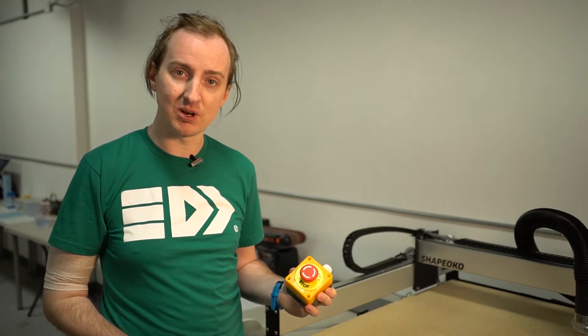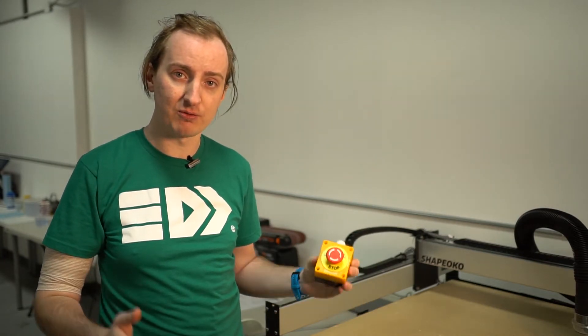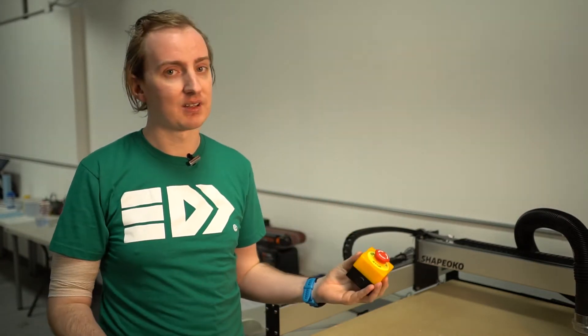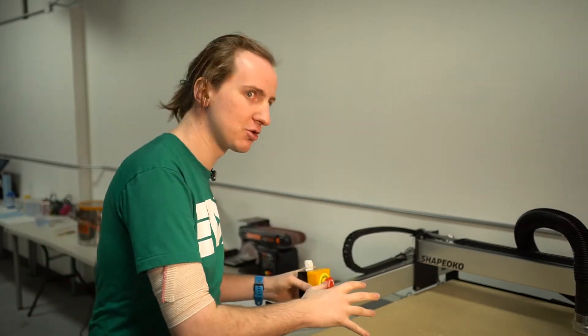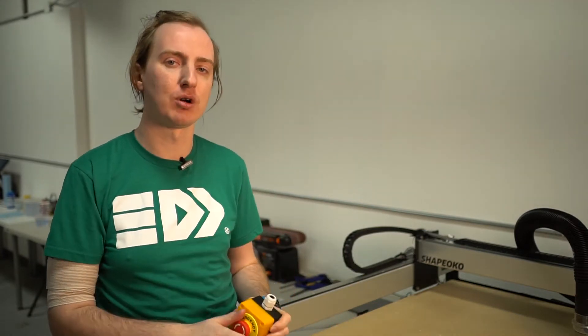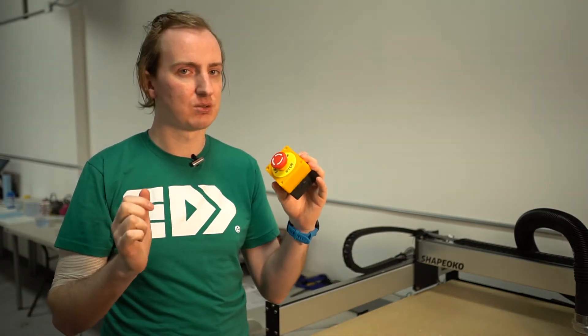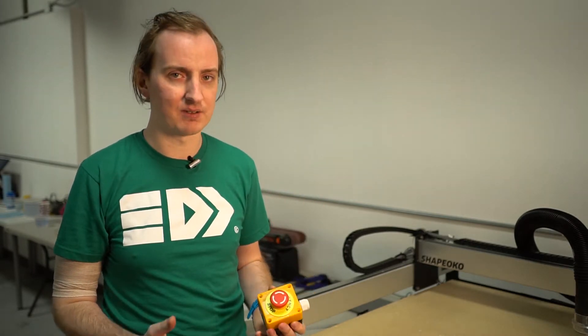The idea being that if you're in a panic situation and you want to just cut the power off, you slam the button down, and the machine turns off. And crucially, you can't accidentally un-push the button. If you're reaching over the machine and trying to get something, you can't knock it on or off. You have to twist it to turn it back on again, and that makes it a lot safer.